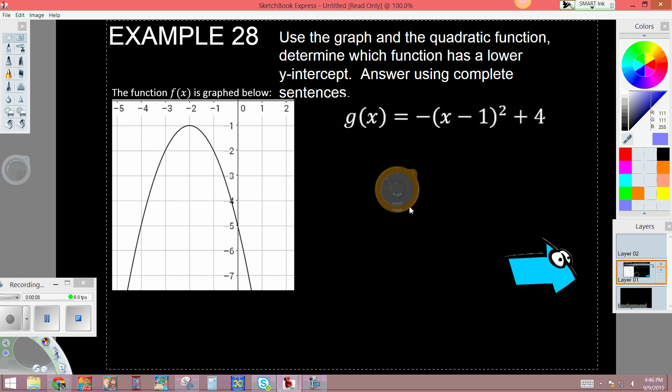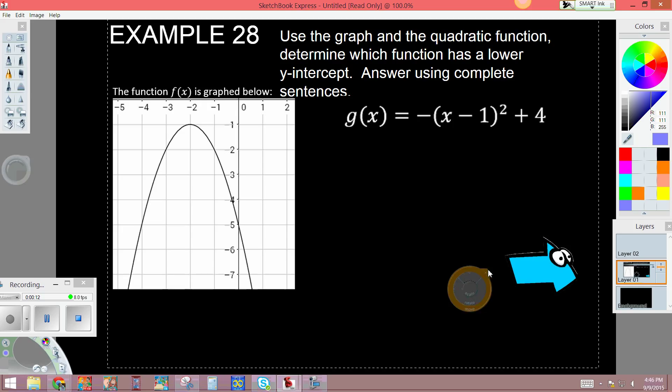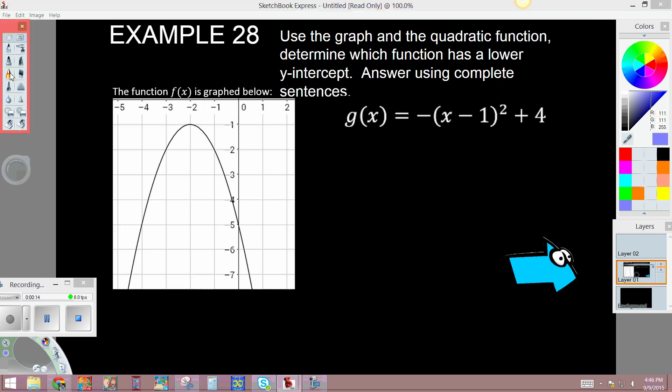So if we take a look at this one, we need to figure out which one has a lower y-intercept. The easiest one to start with is the graph, so we're going to start with right here. That is f(x).